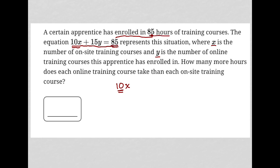So 10x is hours and 15y is also hours. Every on-site training course is 10 hours, and every online training course, as indicated by 15 times y, is 15 hours. So the answer to how many more hours each online training course takes than each on-site training course is simply five hours — online training courses are five hours longer than on-site training courses. So our answer here is five.